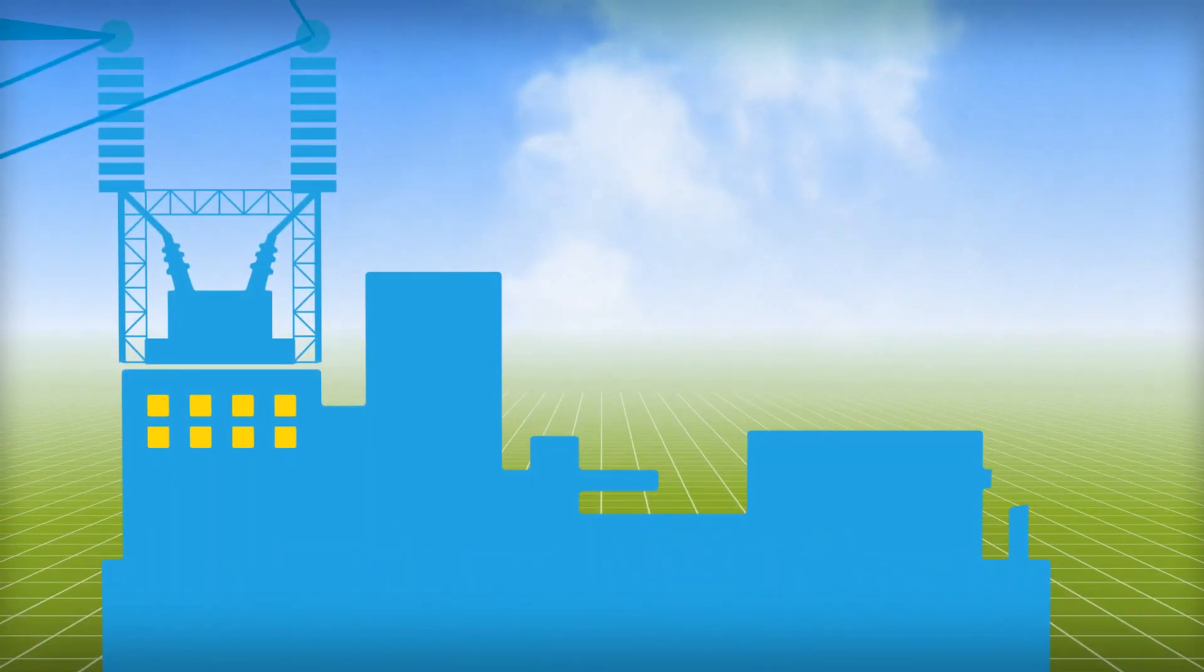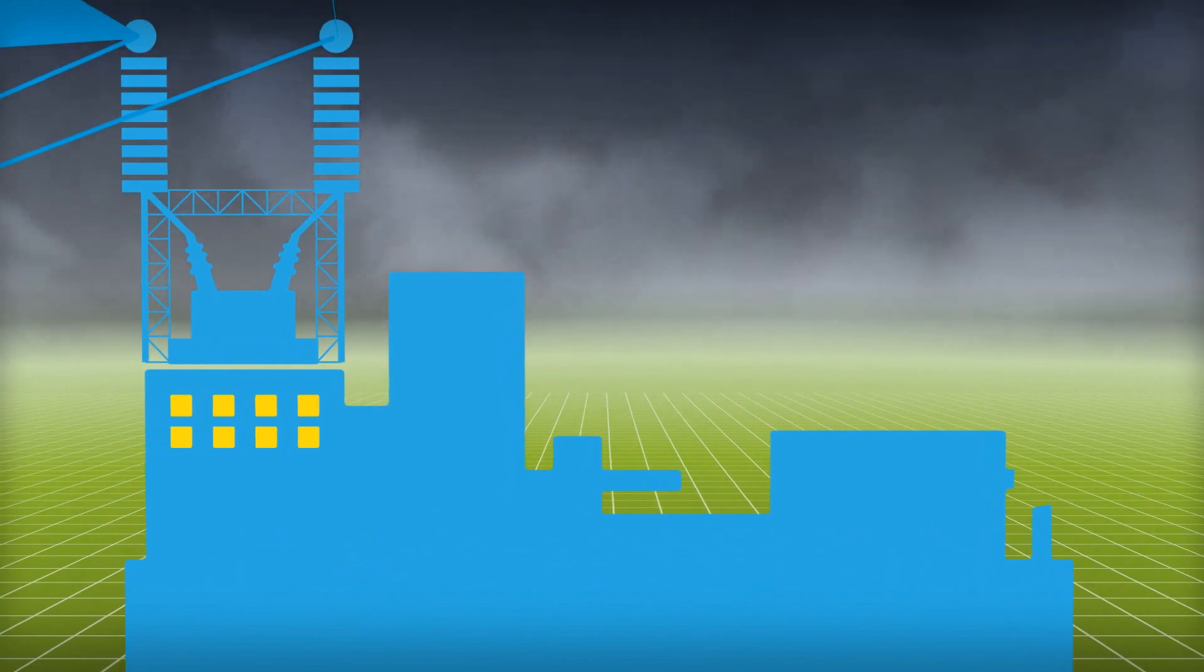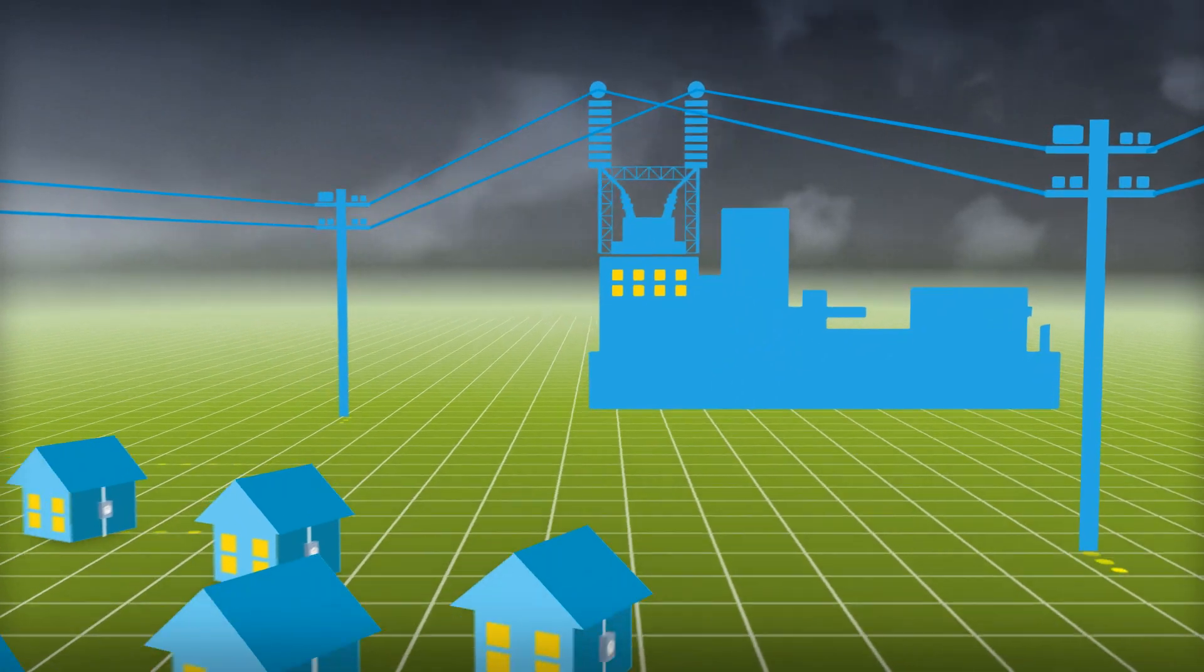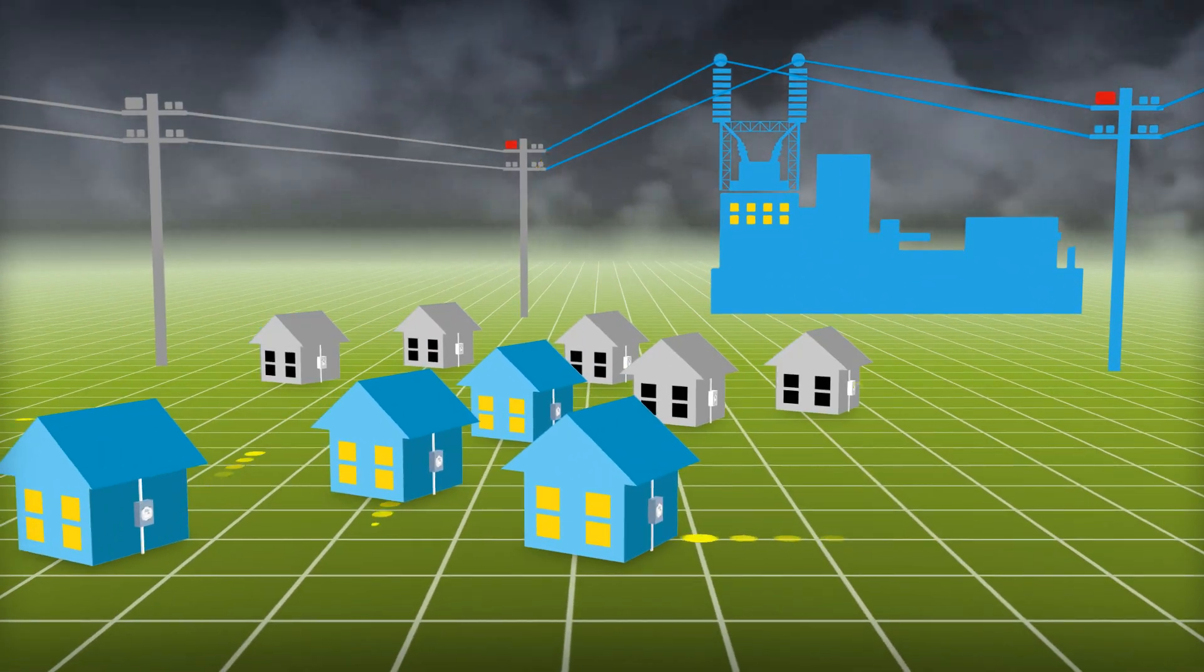Smart substations help prevent power outages by detecting problems before they happen. Smart switches on power lines reroute electricity around problems when they occur.